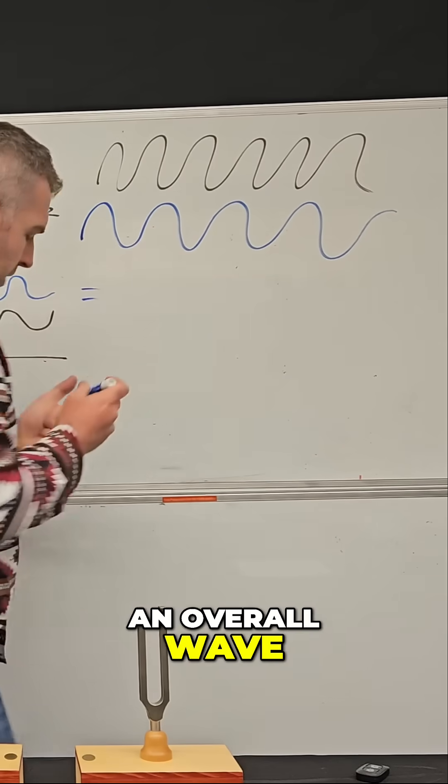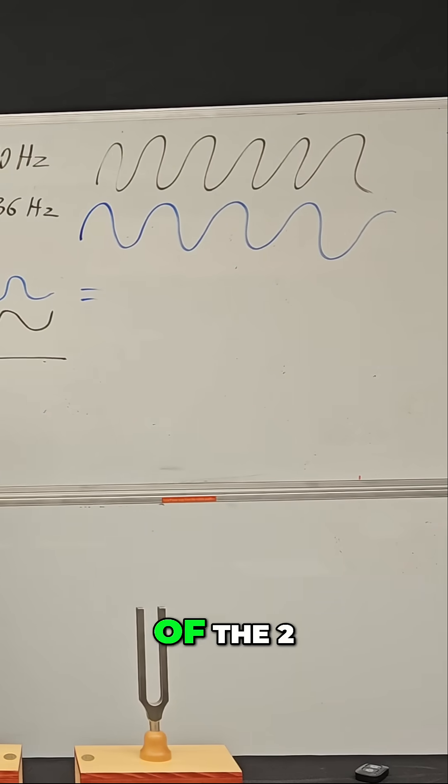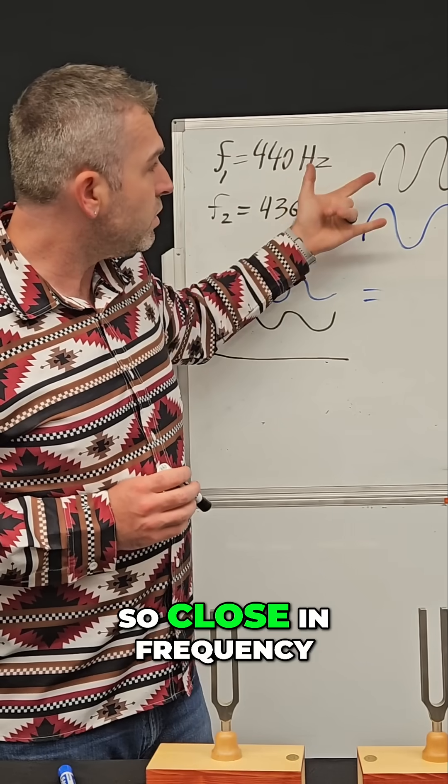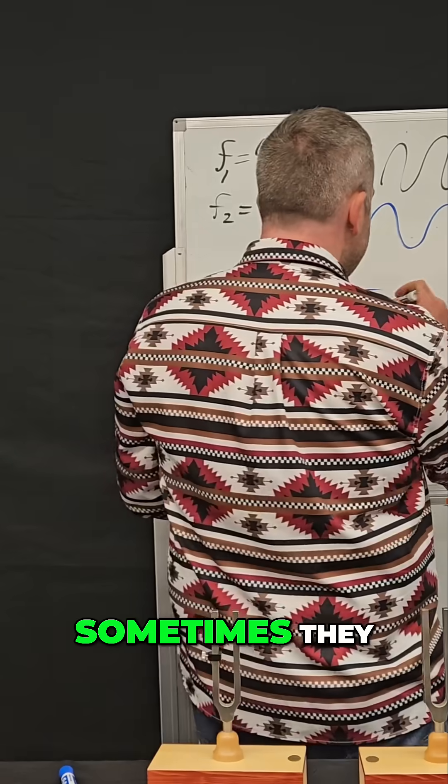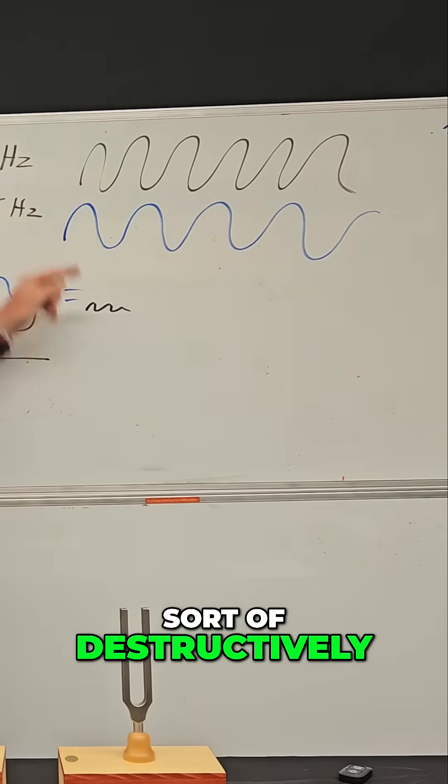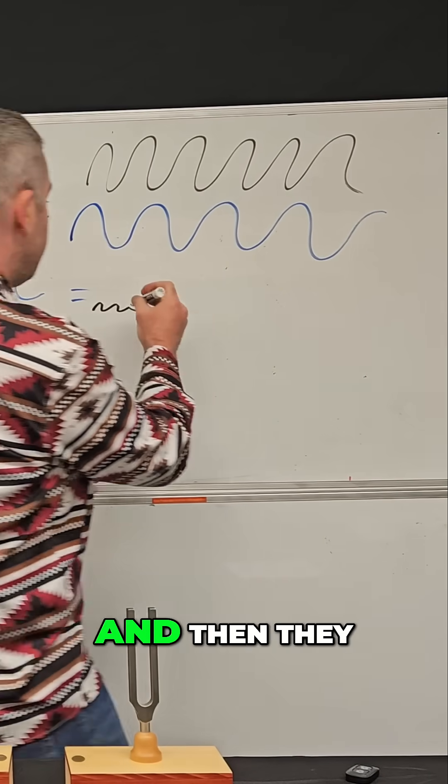They will produce an overall wave that is a combination of the two. Because they're so close in frequency, sometimes they interfere sort of destructively where they mostly cancel out, and then they start to interfere constructively.